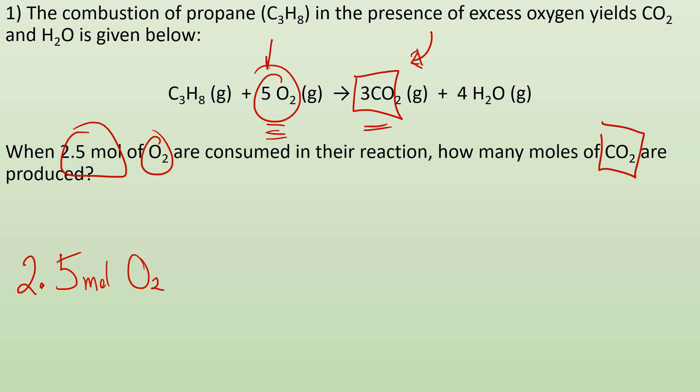Well, it's a 5 to 3 ratio. For every 5 O2 I use, I can make 3 CO2. So now my conversion factor is going to have to reflect that. So if I'm trying to cancel out moles of O2, I'm going to put moles of O2 on the bottom. So for every 5 moles of O2, I can make 3 moles of CO2.